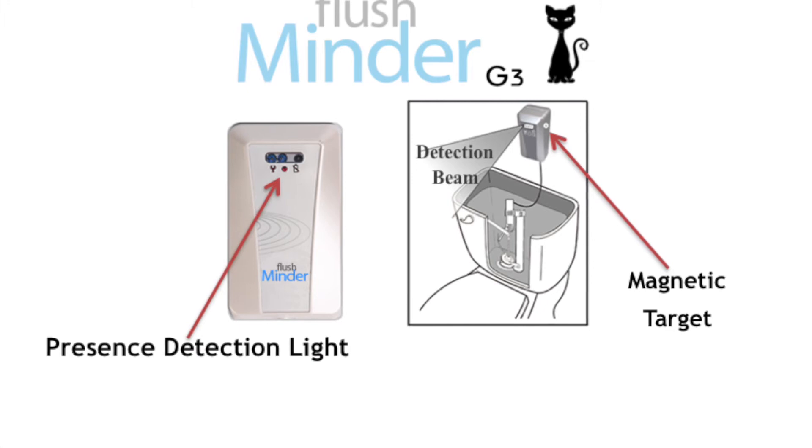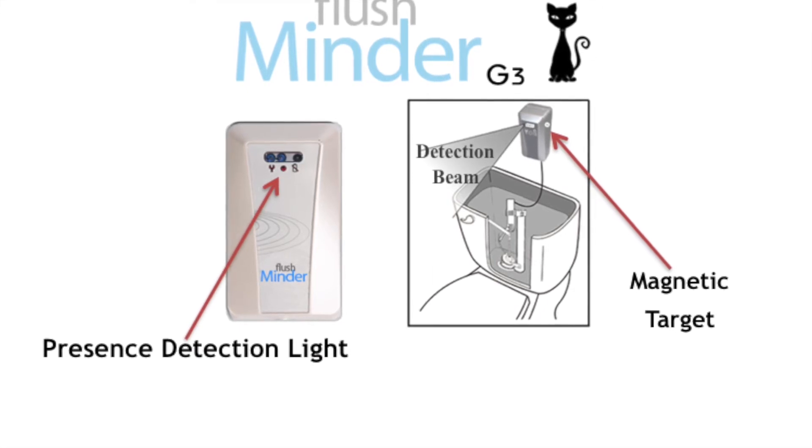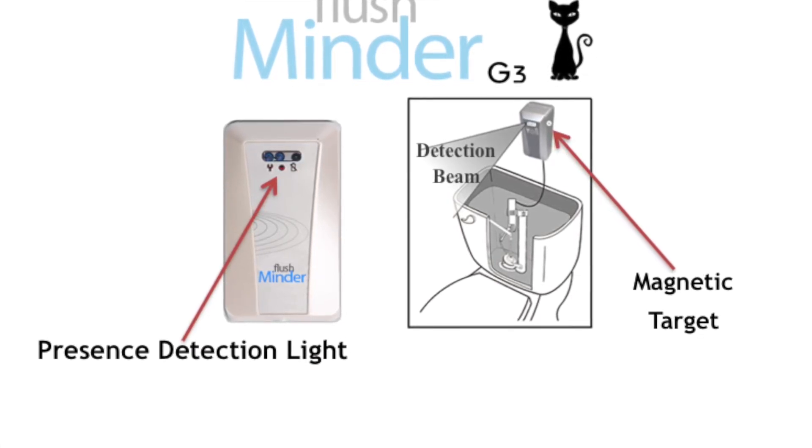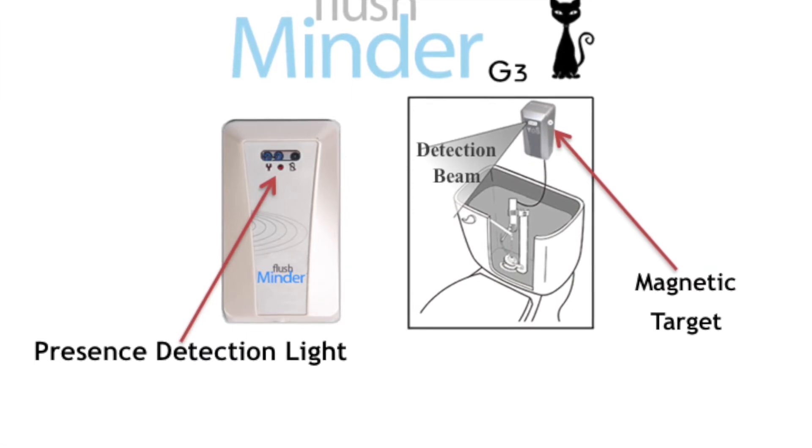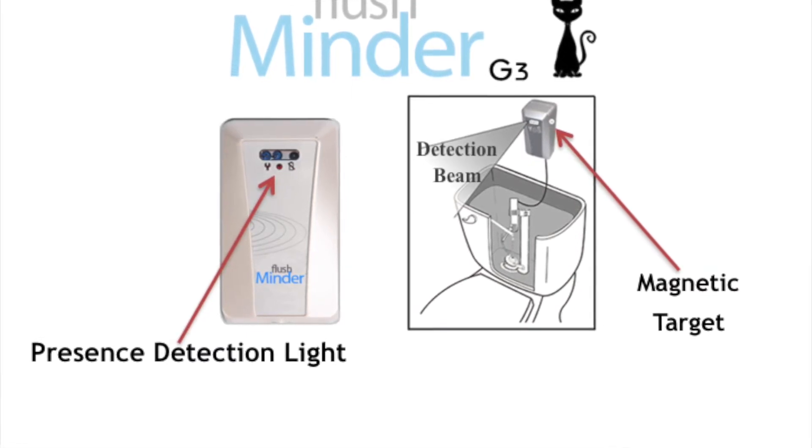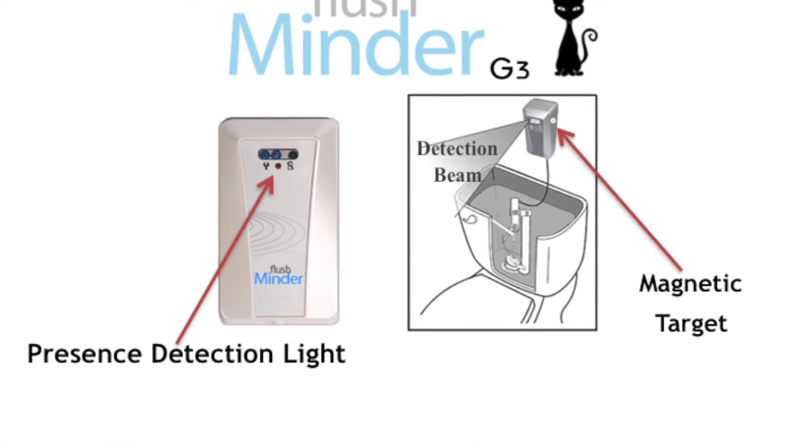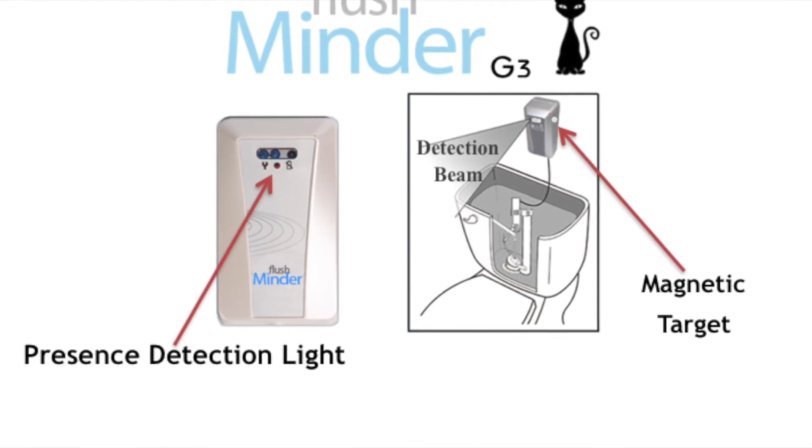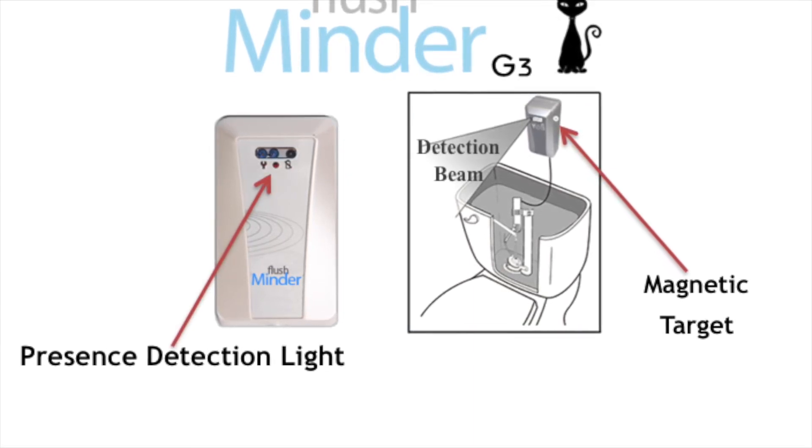Install the batteries and hold the sensor against the mounting plate. Once you install the batteries, it's important to stand immediately to the side out of the range of the presence detection beam. As the sensor is calibrating, the presence detection light will flash. When calibration is complete,